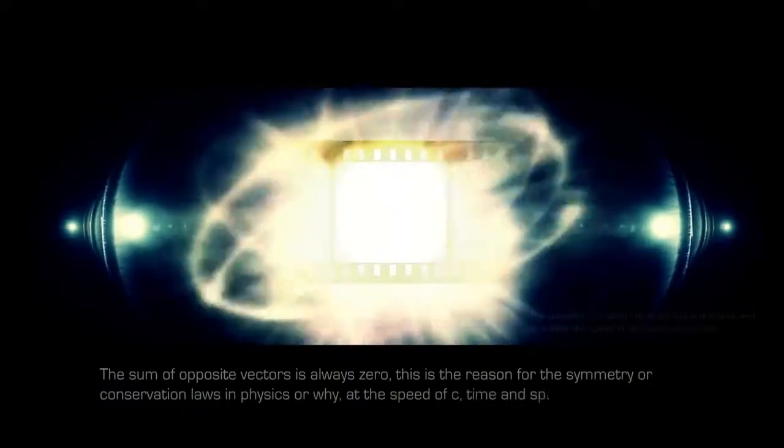The sum of opposite vectors is always zero. This is the reason for the symmetry or conservation laws in physics, or why, at the speed of C, time and space are zero due to length contraction and time dilation.